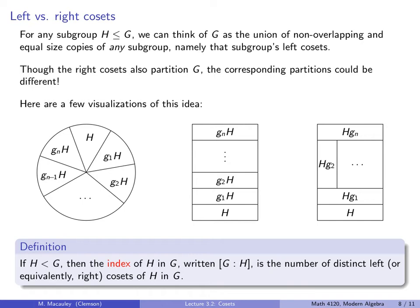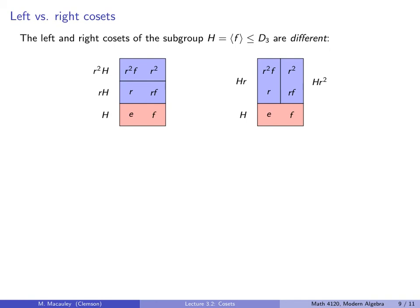Here is a definition we will need throughout the rest of the course. For any subgroup H of G, the index of H in G — written [G:H] — is the number of distinct cosets of H in G. Whether we count left or right cosets, it's the same number.